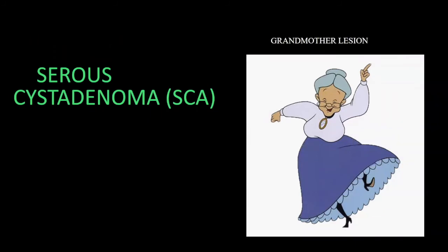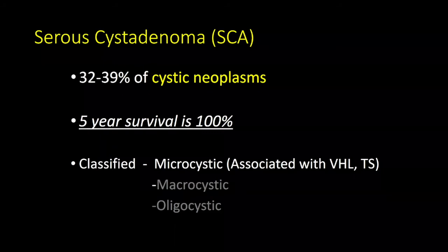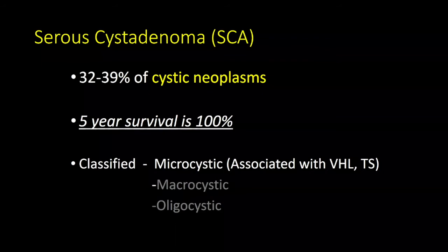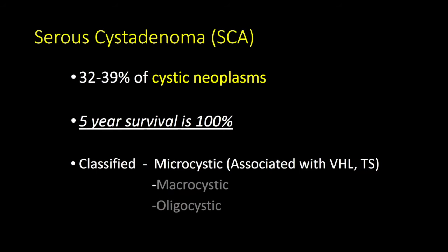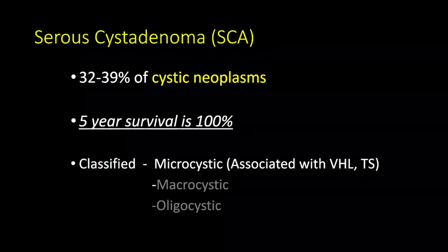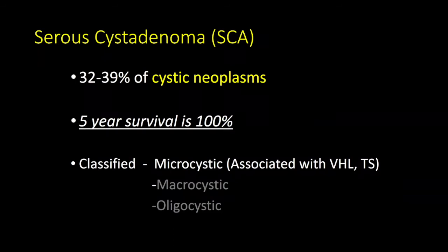Serous cyst adenomas, or SCAs — the so-called grandmother lesions — occur predominantly in the older female age group, making up just under 40% of cystic neoplasms with a five-year survival of 100%. They can be microcystic (tiny cysts a couple of millimeters in diameter), macrocystic (which can be confused with mucinous neoplasms), or oligocystic. Not all SCAs have the classic microcystic appearance — they can vary morphologically.